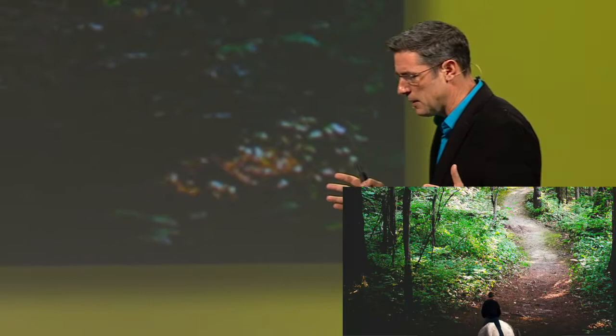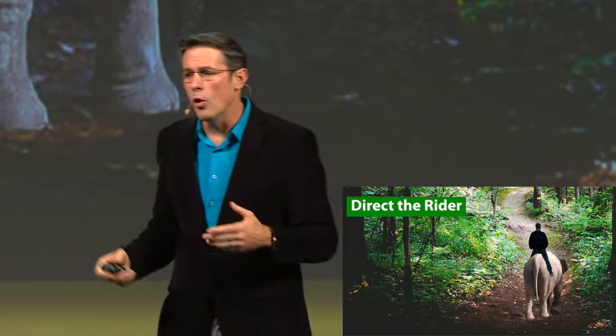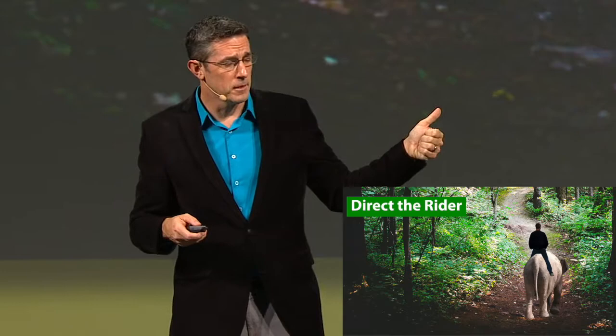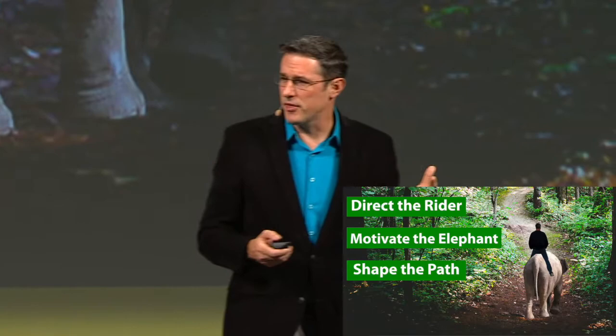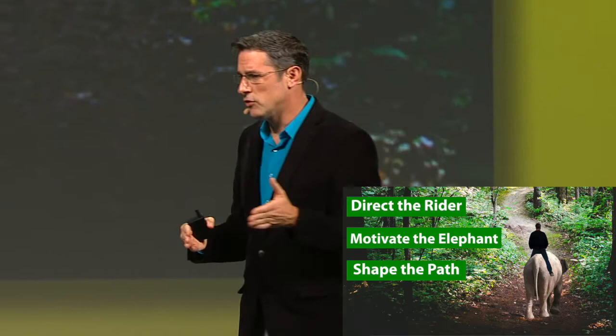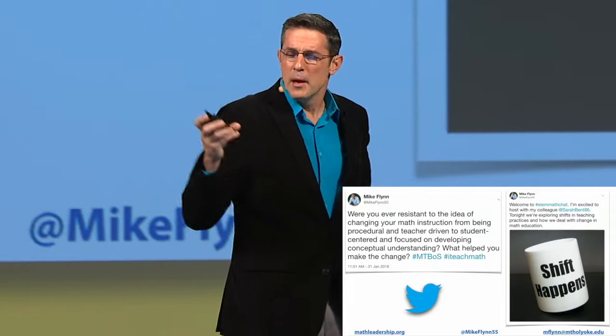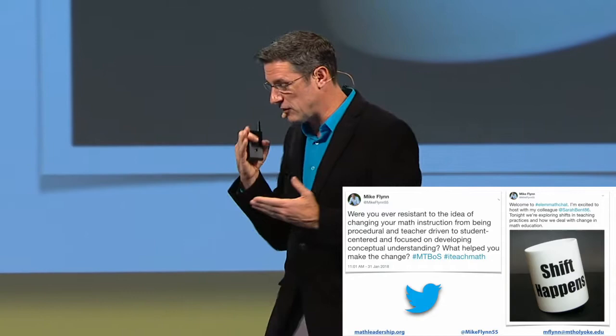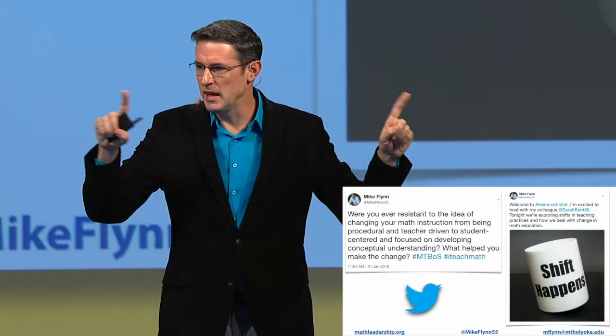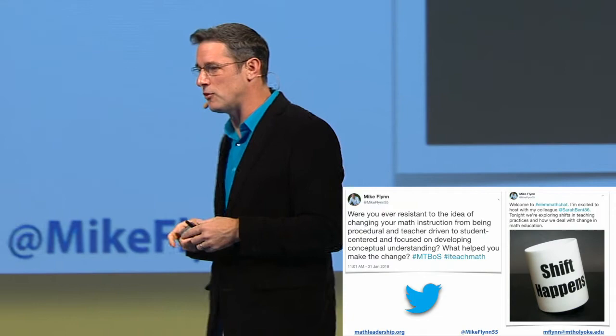Now there's a third part of this framework — the path. The path is the environment you're in: a classroom, a school, a district — whatever the environment is. You have a rider and elephant navigating this path. The directions for affecting change really well are: direct the rider, motivate the elephant, and shape the path — make that path crystal clear and make it easier for people to make that change. When I started my investigations on resistance, I went to Twitter and asked questions about whether people had ever been resistant to change. I got hundreds of responses, and they all fell into either rider issues, path issues, or elephant issues.